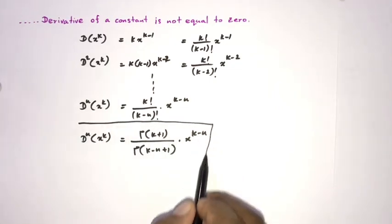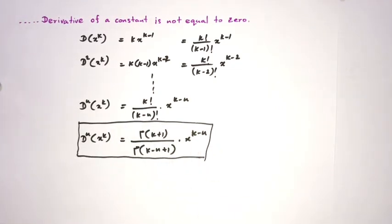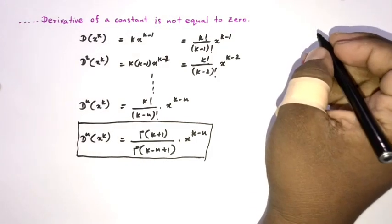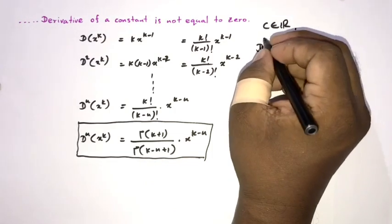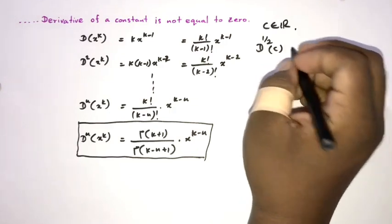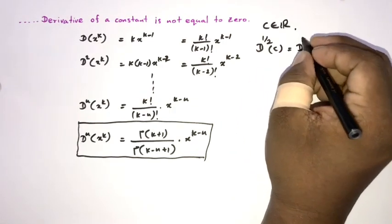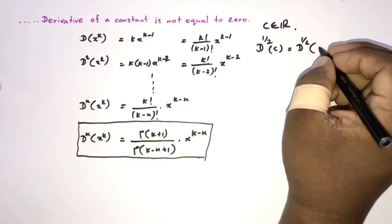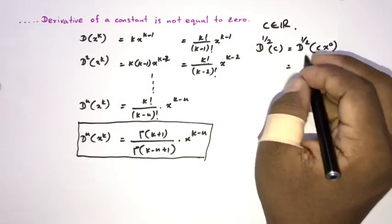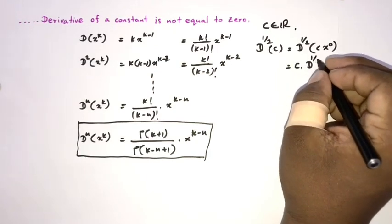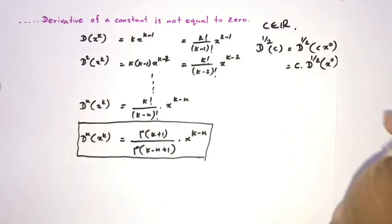This is the general power rule of fractional differentiation, where n can be any real number. Now we find the derivative of a constant. We take the half-derivative of a constant c, written as D^(1/2) of c, which equals D^(1/2) of c times x to the zero power.